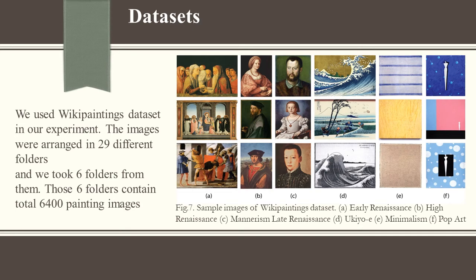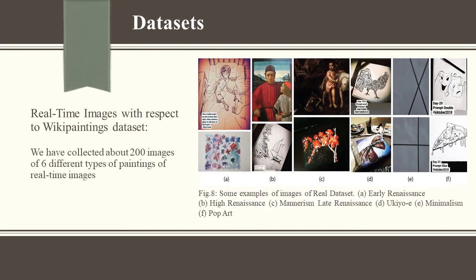Datasets: We used the WikiPaintings dataset in our experiment. The images were arranged in 29 different folders and we took 6 folders from them. Figure 7 shows sample images of the WikiPaintings dataset. Figure 8 shows some examples of real-time images with respect to the WikiPaintings dataset.